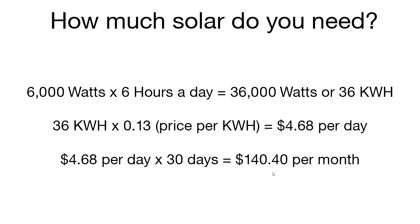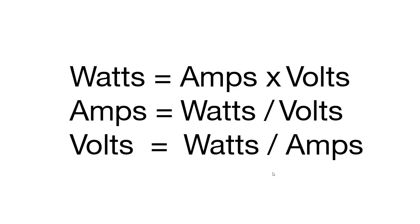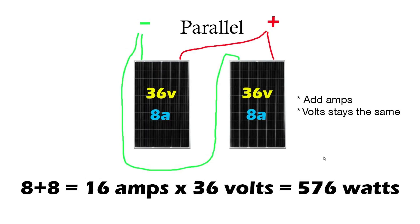Now you should have a good understanding of how to calculate your kilowatt hour usage. Let's talk about how to wire your solar panels and the different options you have. To understand that we should cover some basics: watts equals amps times volts, or your amps equals watts divided by volts, or volts equals watts divided by amps.